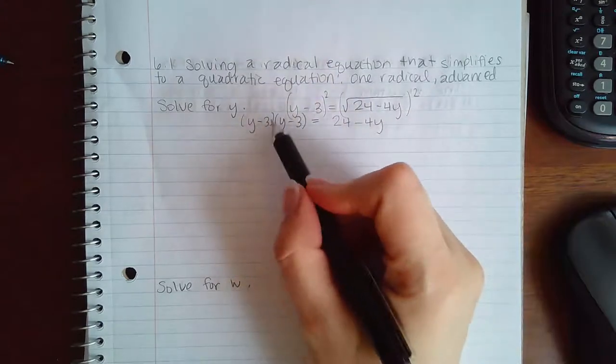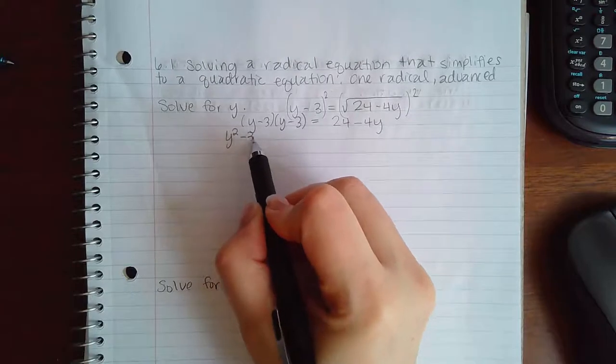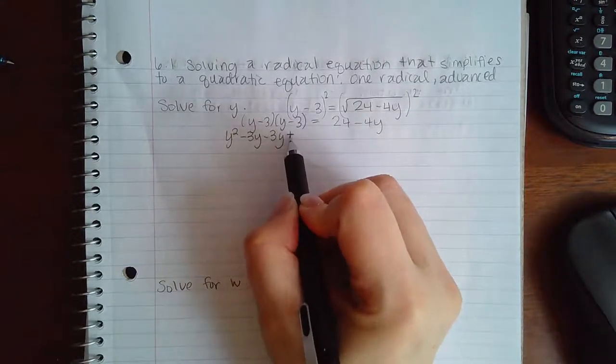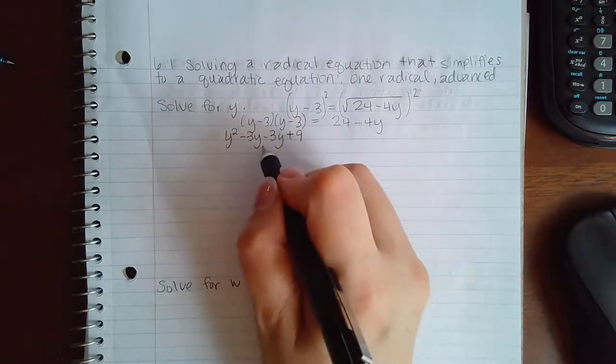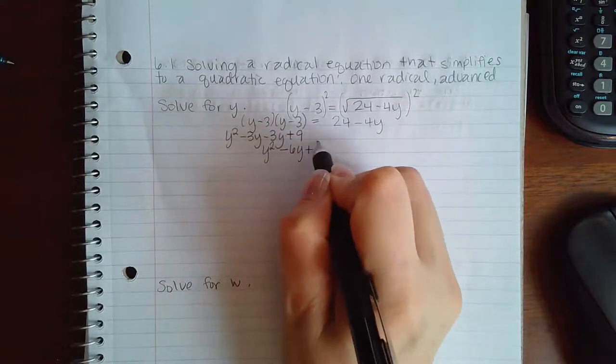So when I take y minus 3 times itself, I actually end up with y squared minus 3y minus 3y and then a positive 9. And if I combine my like terms, I end up with y squared minus 6y plus 9.